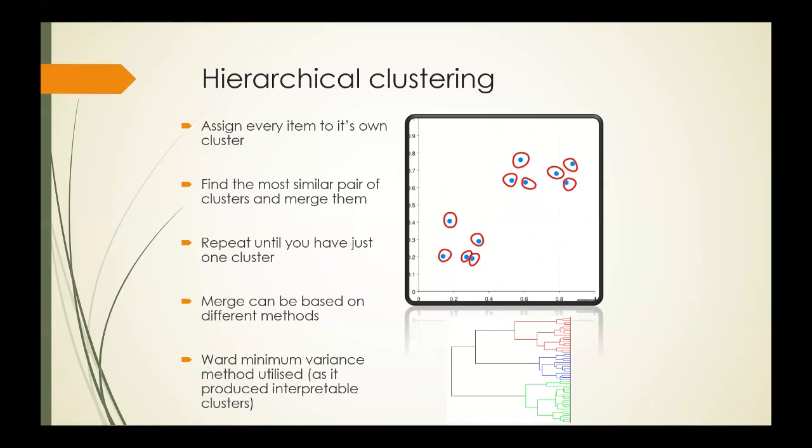At each stage, two clusters emerge that provide the smallest increase in the combined sum of squared errors. These steps are repeated until all items are clustered into a single cluster. Ward's minimum variance method was utilized here because it produced interpretable clusters and has been proven before to produce interpretable clusters in previous studies.